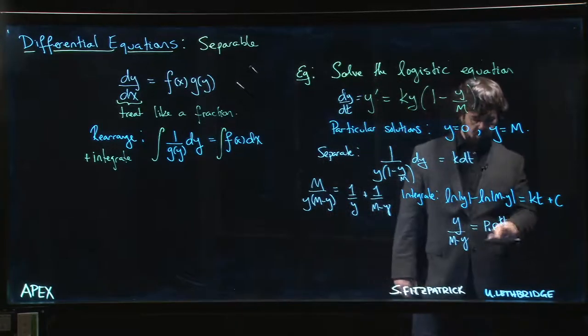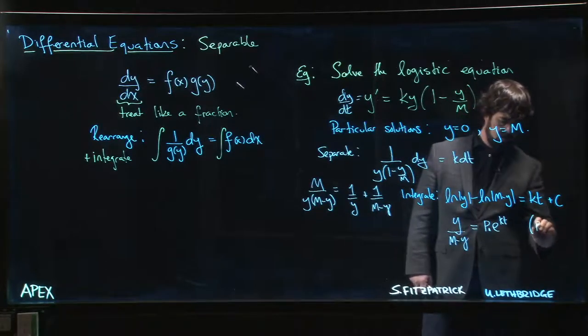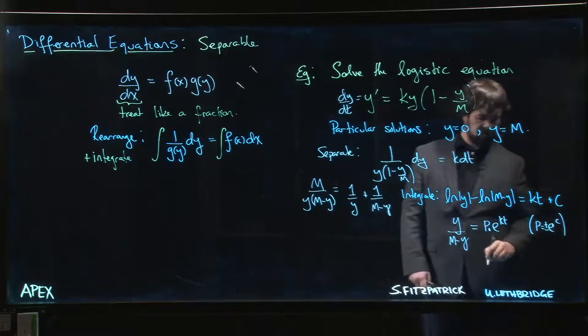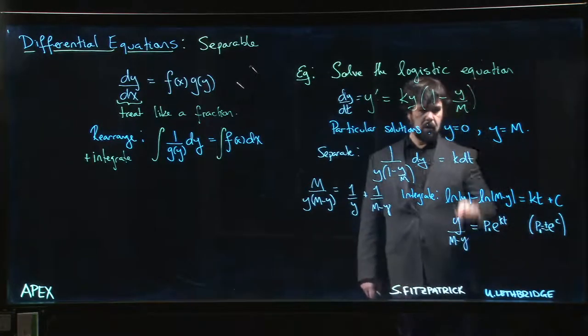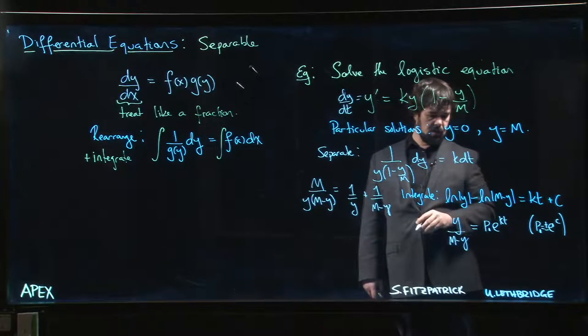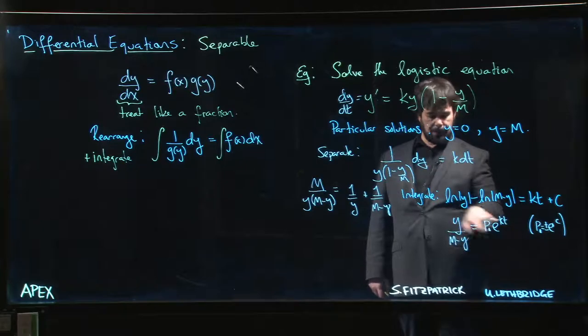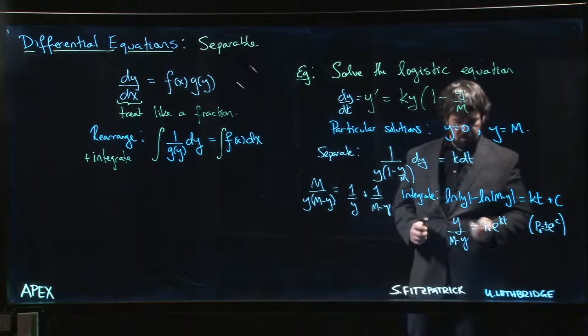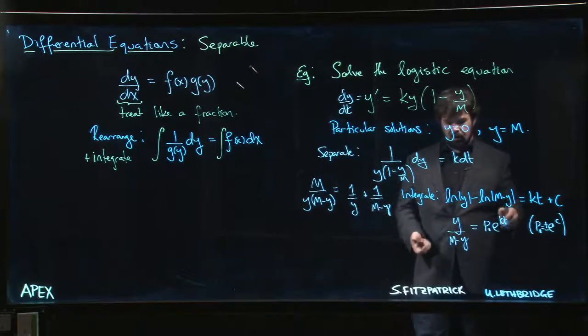I'm going to call it p_0, e to the kt, where that p_0 is, well, p_0 is, you know, kind of like e to the c, well plus or minus e to the c. That's where we account for that absolute value. And of course we could also allow p to be zero, which helps us capture that particular solution there. We can't actually capture y is equal to M as we have it. We've been dividing by zero, that's going to be problematic.